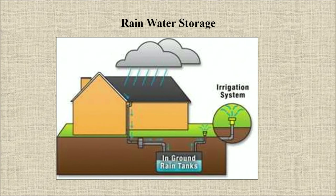Rain water storage systems are a simple method of capturing rain water, traditionally from roofs, for use as an alternative water supply source and to reduce consumption of stream water. When installed and maintained in accordance with recommended guidelines, they can provide a high quality source of water. Details have already been discussed in chapter 30a.